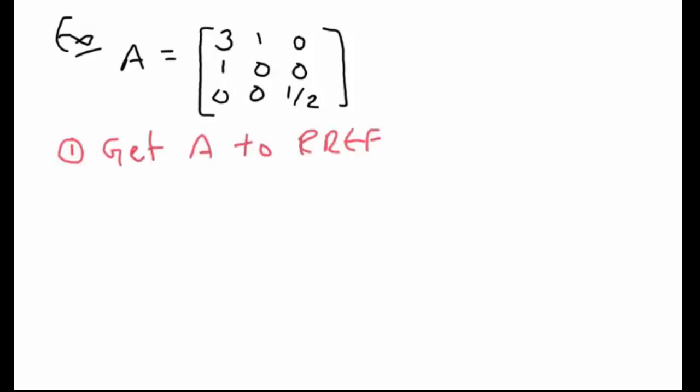Just like before, our first goal here is to try to get A into its reduced row echelon form. Specifically, we're hoping that we can get an identity matrix. This means that A is going to be invertible, and we're going to be able to express it as a product.